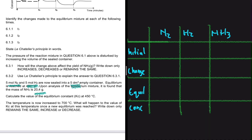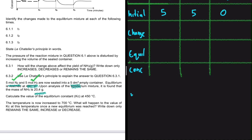The initial number of moles of nitrogen gas is five moles, so we put that here. The initial number of moles of hydrogen gas is also five moles. Since they are sealed in an empty five decimeter cubed container, the initial number of moles of ammonia is zero moles.